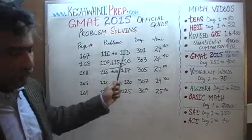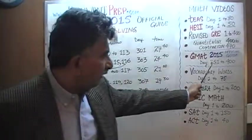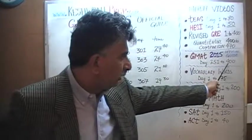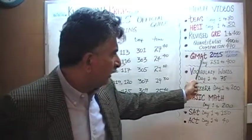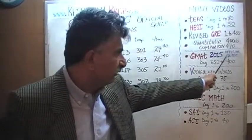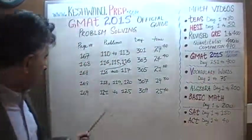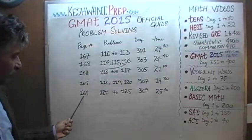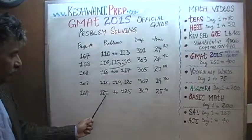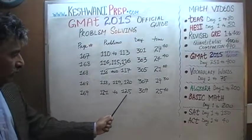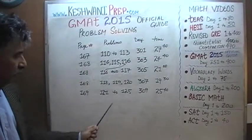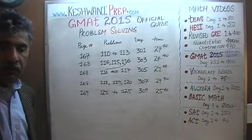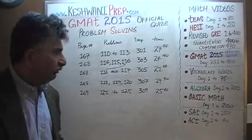Solutions to all the problems are presented from day number 251 through 400 for the GMAT 2015 Official Guide. And finally, on page number 169, we have problems 121 through 125. Solutions to those five problems were presented on day number 309.